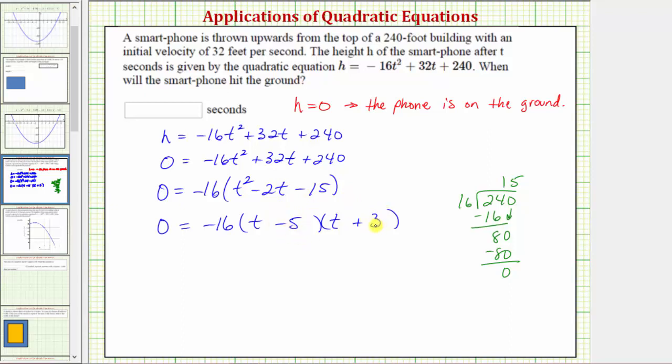Again, negative 5 times positive 3 equals negative 15, and negative 5 plus 3 equals negative 2. And because this product is equal to zero, either t minus 5 equals zero or t plus 3 equals zero.